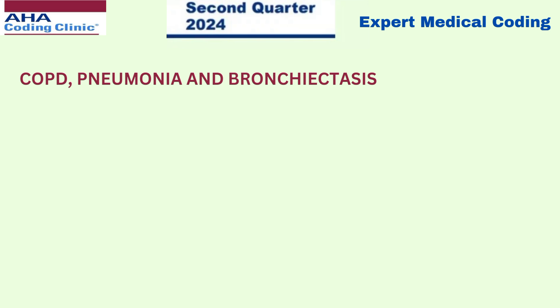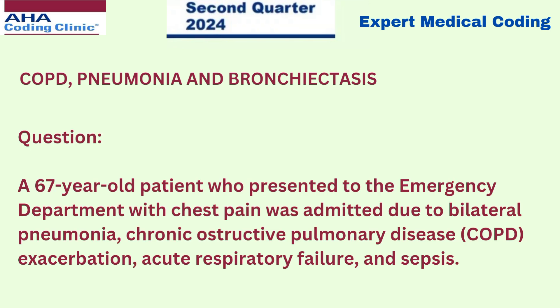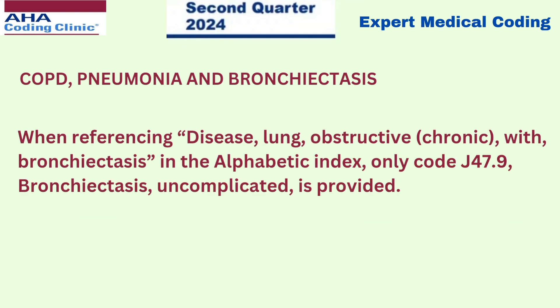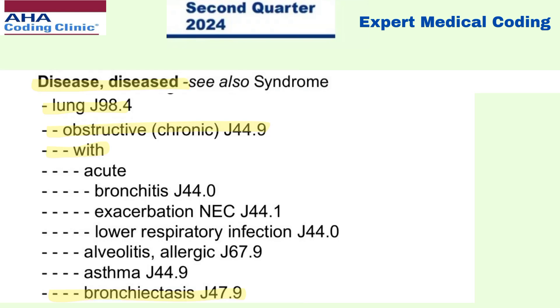Now for the third coding clinic: COPD, pneumonia and bronchiectasis. A 67-year-old patient presented to the emergency department with chest pain and was admitted due to bilateral pneumonia, COPD exacerbation, acute respiratory failure and sepsis. The patient's respiratory conditions worsened overnight and the patient expired the following day. The provider documented bilateral pneumonia secondary to severe COPD with chronic bronchiectasis as a secondary diagnosis. When referencing disease, lung, obstructive, chronic with bronchiectasis in the alphabetical index, only code J47.9 — bronchiectasis uncomplicated — is provided, as you can see in the index under disease, lung, obstructive, chronic with bronchiectasis.